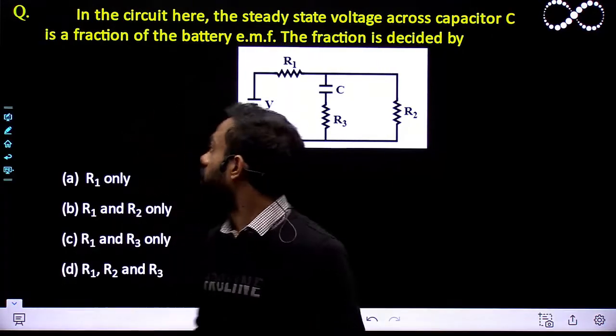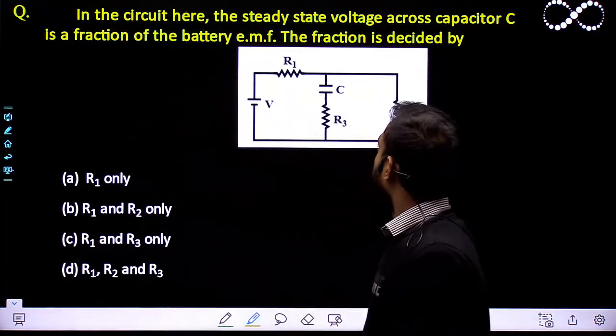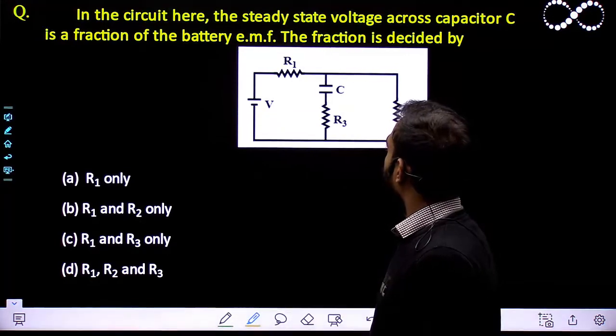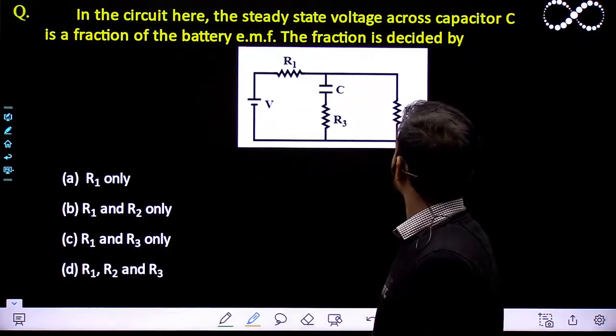Hello students. Let us see this question here. In the circuit here, the steady state voltage across capacitor C is a fraction of battery EMF. The fraction is decided by.